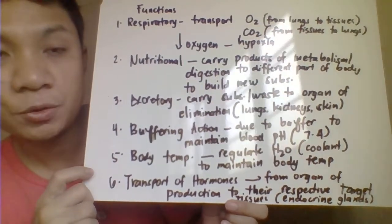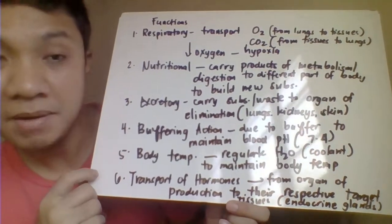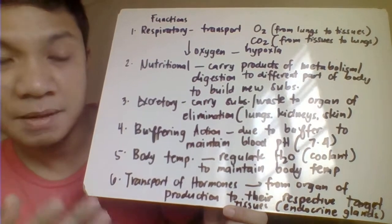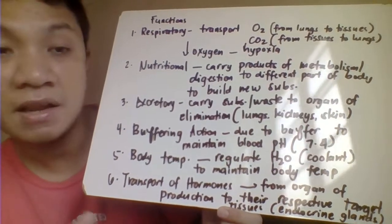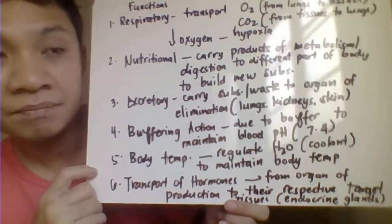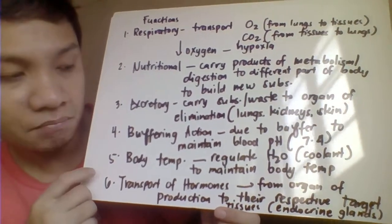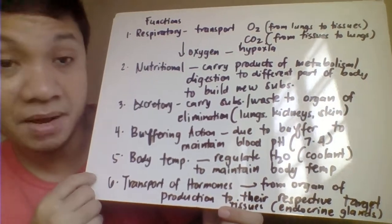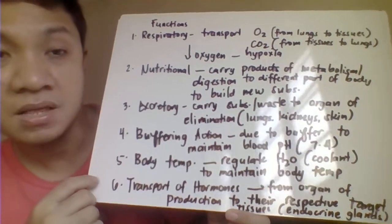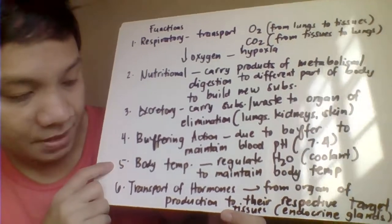Blood also acts as a buffer to maintain the normal blood pH. The normal blood pH is 7.4, ranging between 7.35 and 7.45, averaging to 7.4. We maintain this normal pH because of the different buffer systems found in blood — primarily the bicarbonate-carbonic acid buffer system, although hemoglobin and blood proteins can also function as buffers.